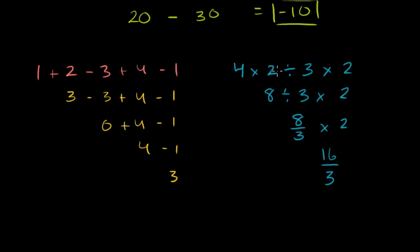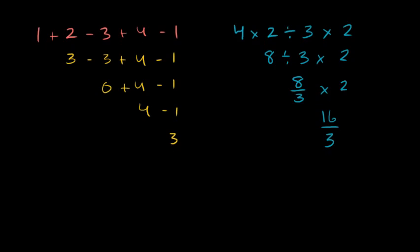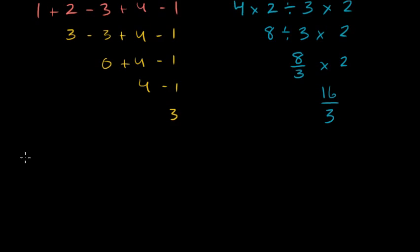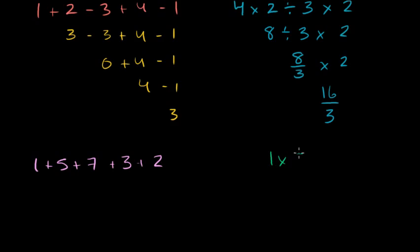The one time where you can be flexible with order of operations is when you have all addition or all multiplication. If you have 1 plus 5 plus 7 plus 3 plus 2, it doesn't matter what order you do it in — you can go right to left, left to right, or start in the middle. The same is true for all multiplication, like 1 times 5 times 7 times 3 times 2. But if there's any division or subtraction mixed in, you're best off just going left to right.